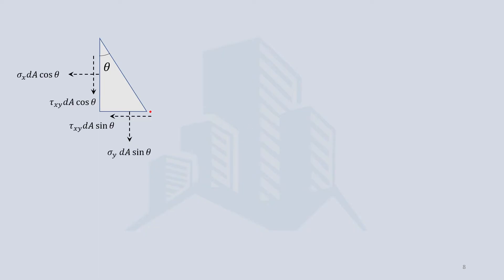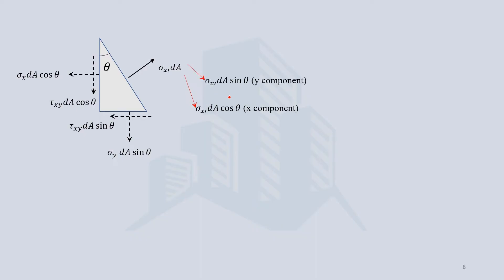Now that we have all forces, we apply equilibrium conditions: the summation of forces in the x direction equals zero, and the summation in the y direction equals zero. The forces on the inclined plane are not along x or y, so we must resolve them into x and y components. Similarly, the shear force on the inclined plane must be resolved into its x and y components before applying equilibrium.